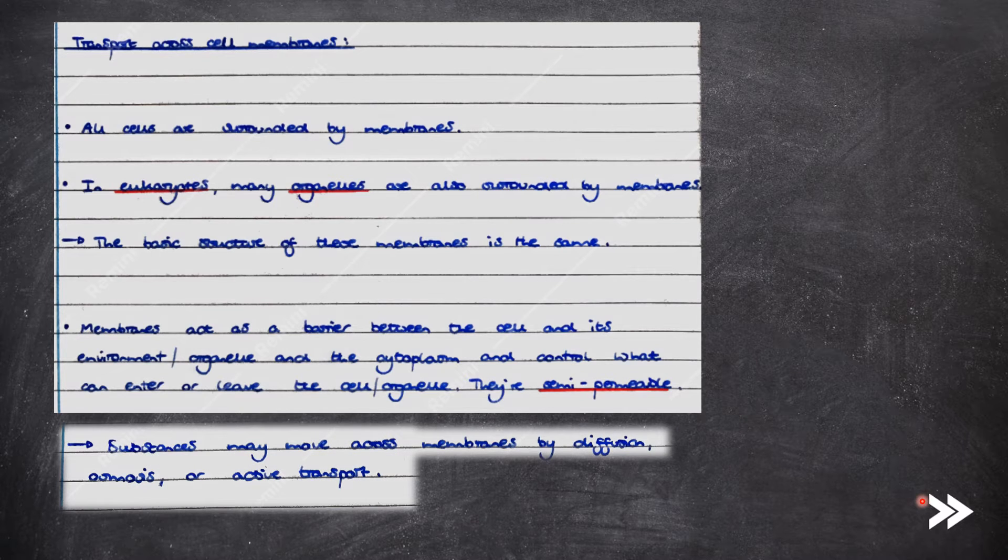Substances may move across cell membranes by diffusion. This is either simple or facilitated diffusion, osmosis, active transport or co-transport. But more on that later.